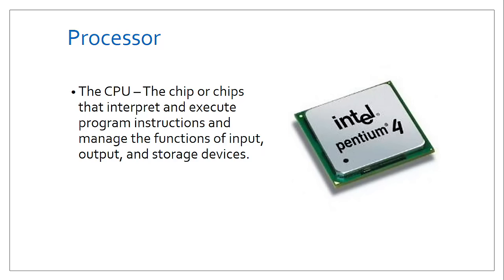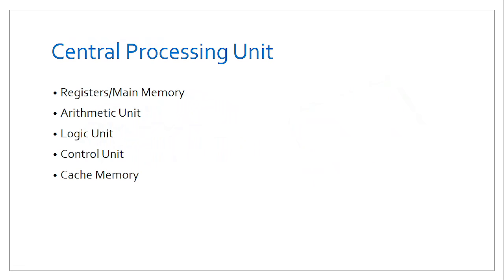A central processing unit or processor has different compartments that give it functionality. It has the main memory where it stores instructions sent to it. It also has the arithmetic unit, which has the capability of adding and subtracting numbers. It also has the logic unit, which carries out comparison functions using operations such as greater than and less than.